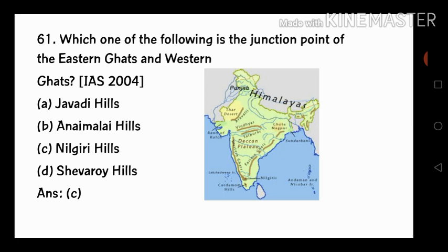Here is the map. The West side is the Western Ghat and the East side is the Eastern Ghat. This is the connecting point. The answer is C — Eastern Ghat and Western Ghat junction point is Nilgiri Hills.